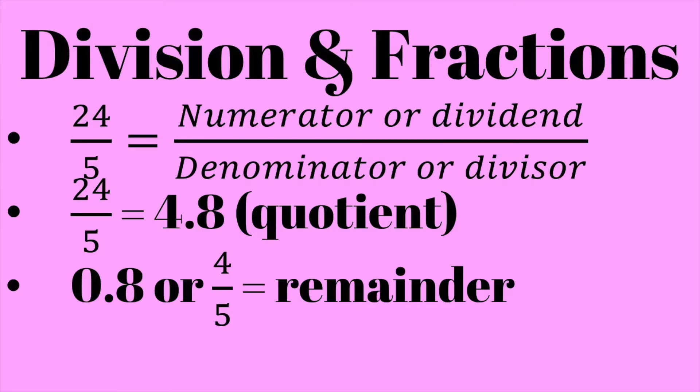Now because you're dividing something, it's also possible that you're going to end up with a fractional or a decimal response. So if we're looking at something like 24 over 5, for example, that's going to equal 4.8 or 4 and 4 fifths. Now that 4 fifths or that 0.8 that is left over is called the remainder. You're probably not going to see that a whole lot on the GRE, but certainly it's possible.